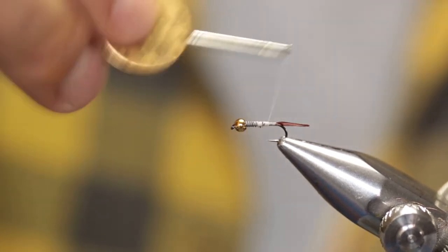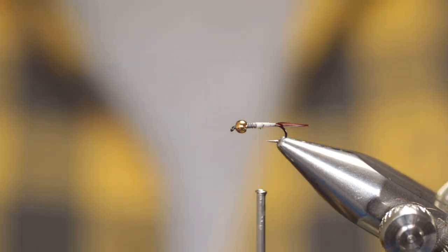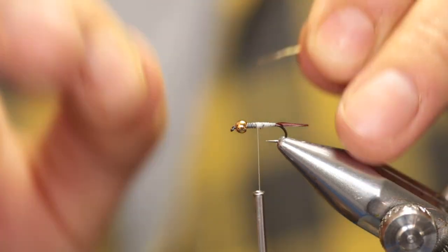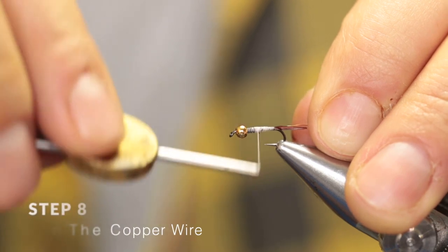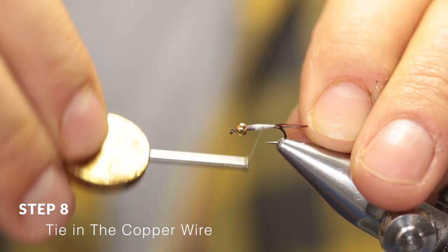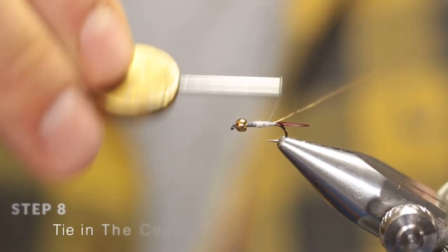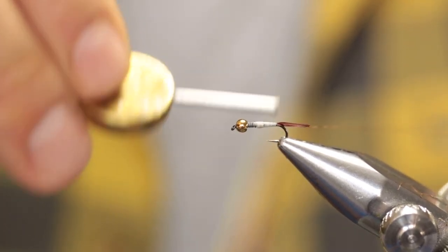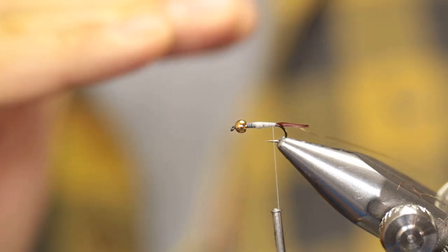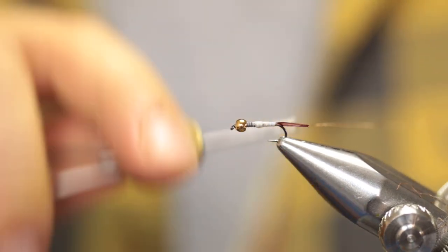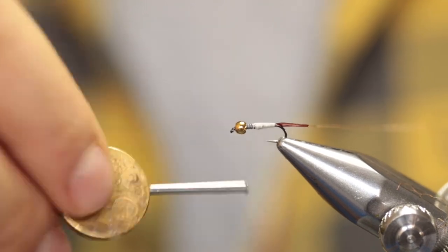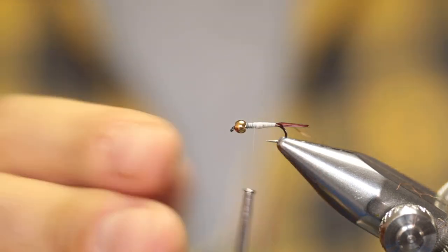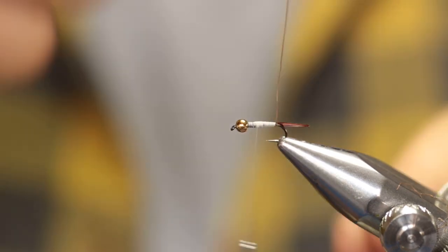Now break off a long section of copper wire and place it on the side of the hook shank at the base of the thorax. While you run your thread back, manipulate the wire to stay on the side of the hook shank. This will create a nice flat profile, very much similar to that of a mayfly. Run your thread forward again, cover a little bit of the lead wire, and leave your thread where your thorax will start.